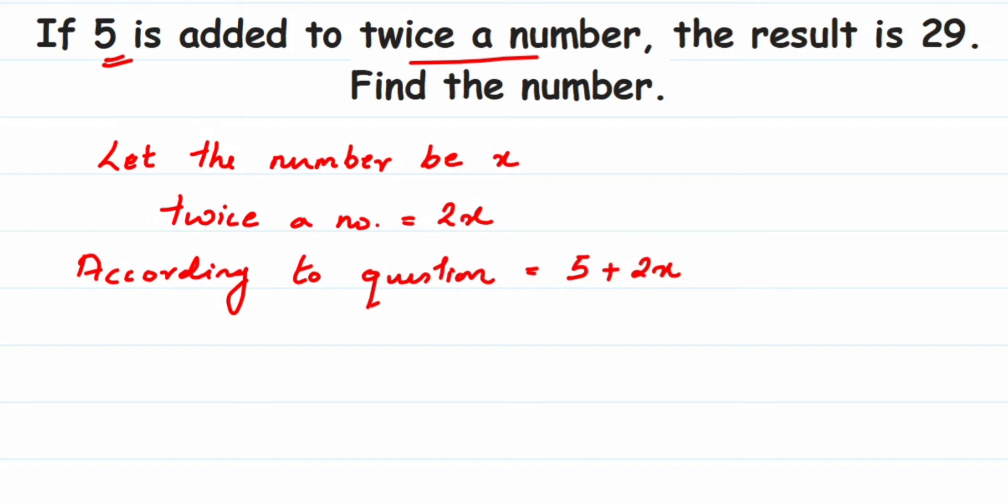So you have 5 plus 2x will be 29, or we can write as 2x plus 5—anything will be the same. You can write in either way. So here I'm going to write down 2x plus 5 is equal to 29.